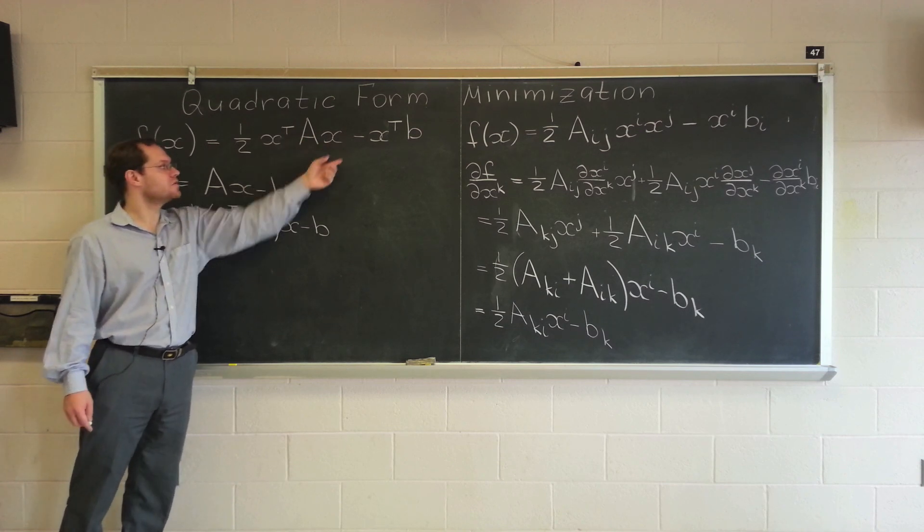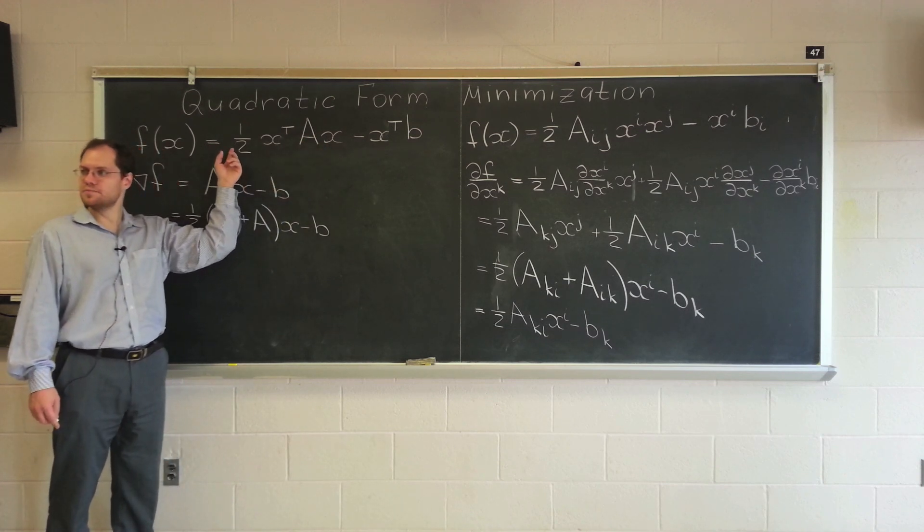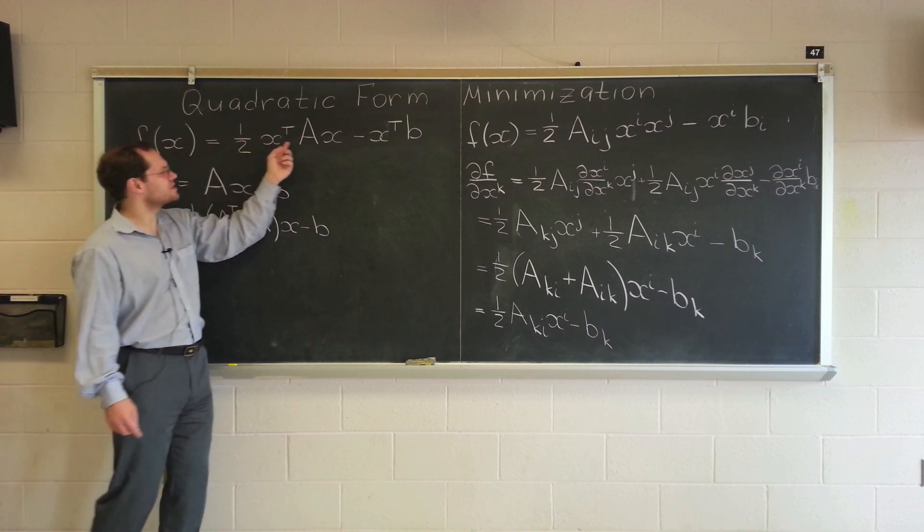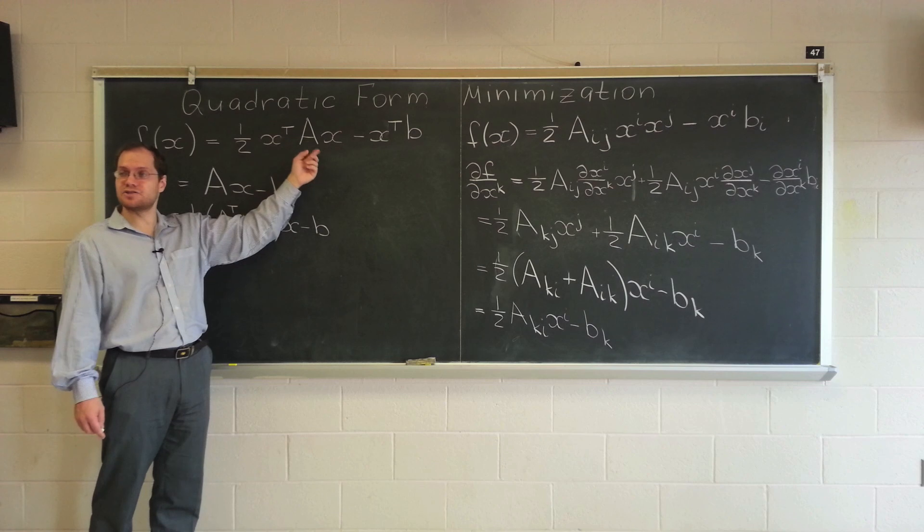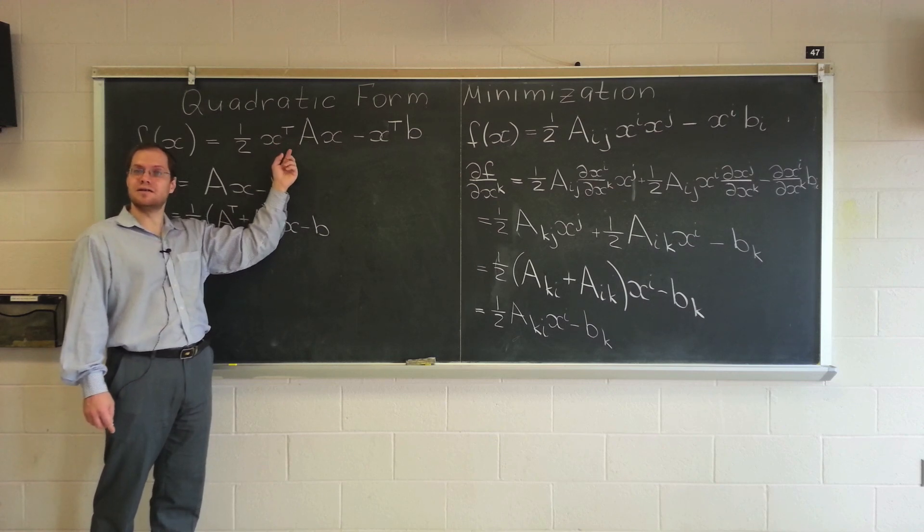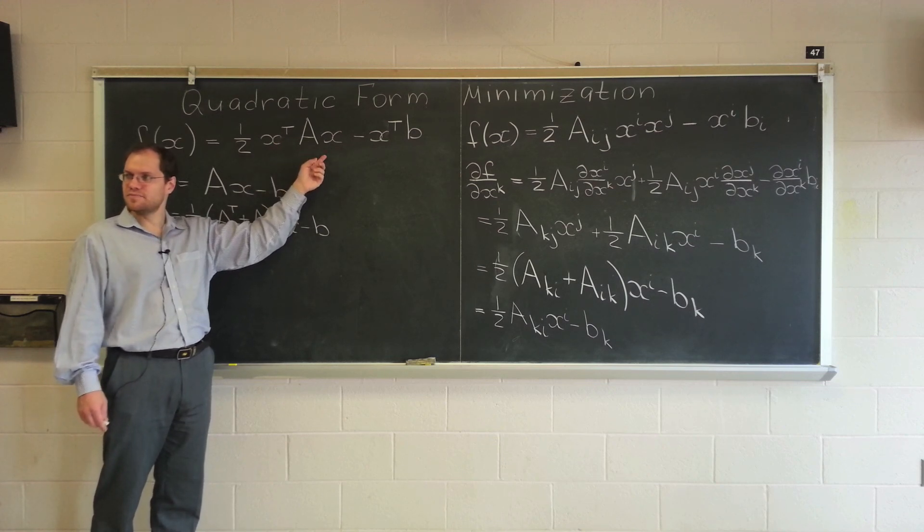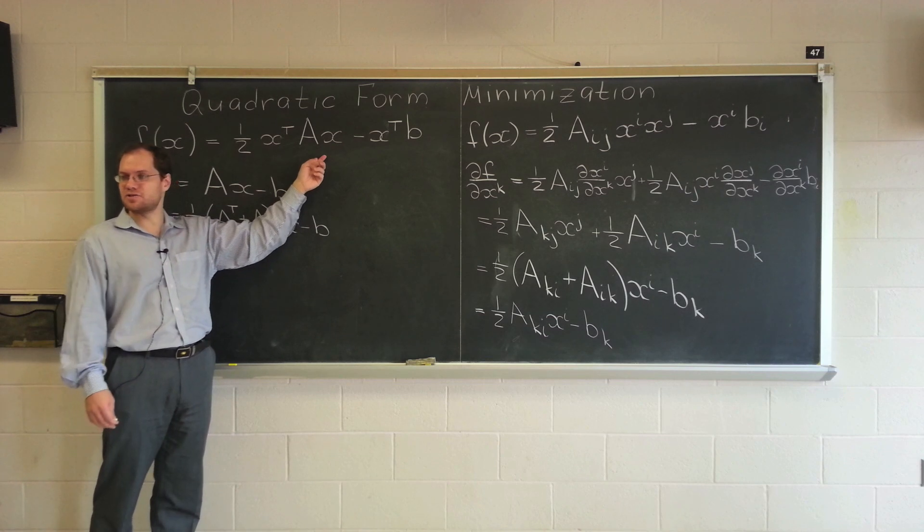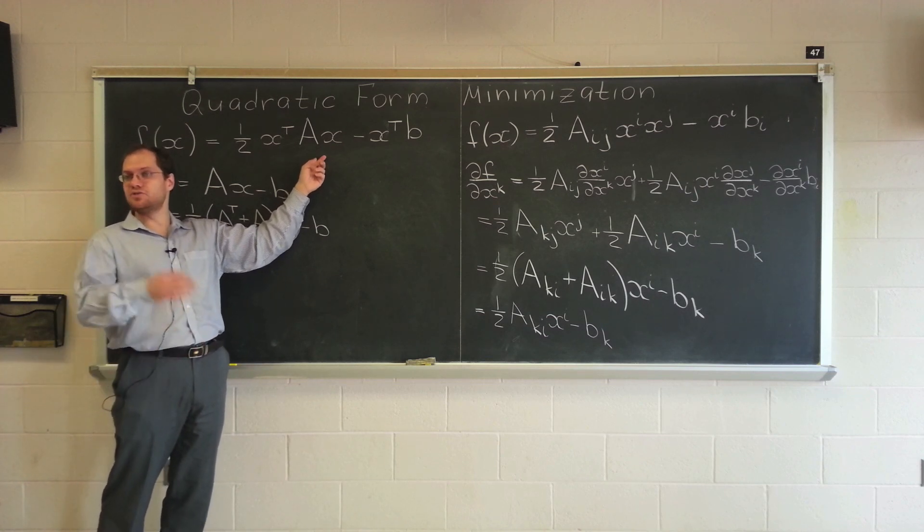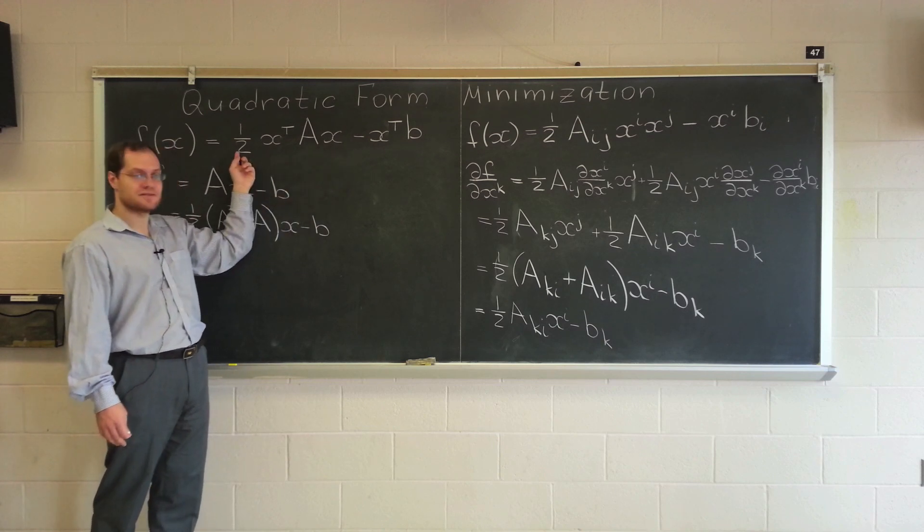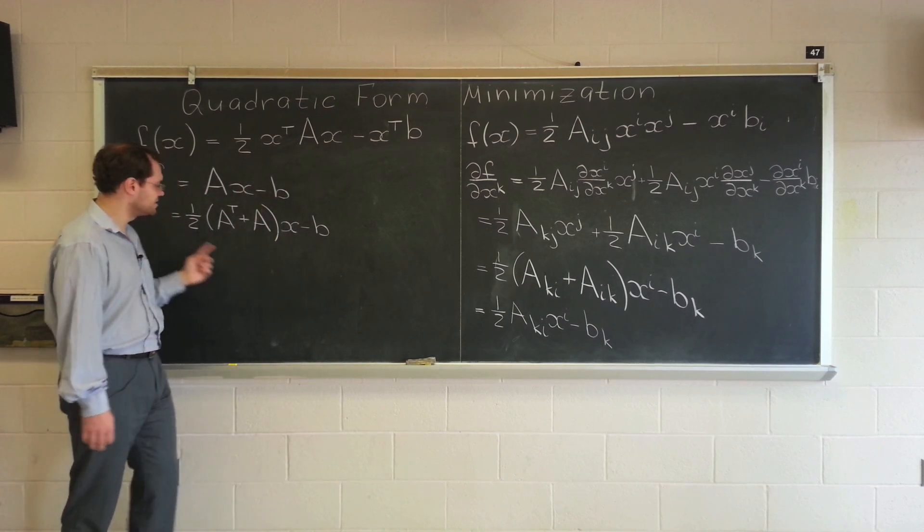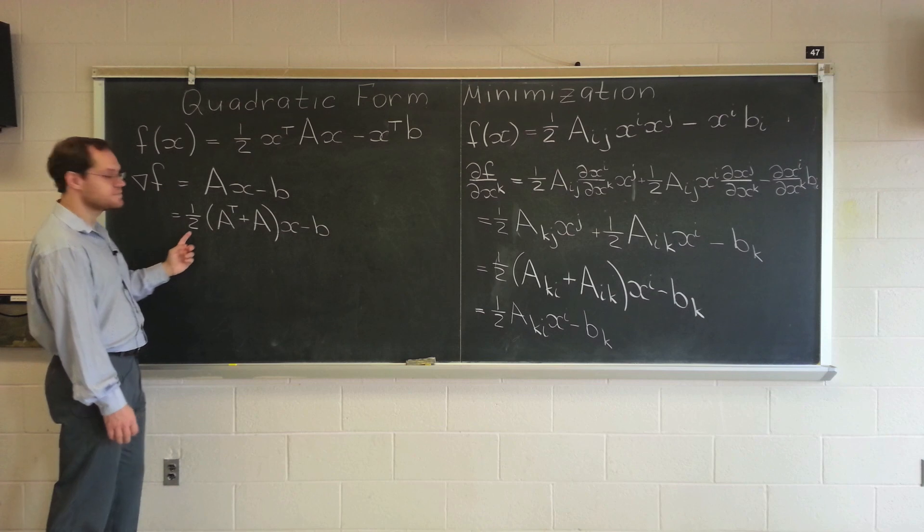So, if you think back to linear algebra, actually, if you replace this A with one half (A + A transpose), which is called the symmetric part of A, it will change this matrix without changing the quadratic form. Because this matrix has, this product has A_12 x_1 x_2, and A_21 x_1 x_2. And if you factor out x_1 x_2 in parentheses, you'll have A_12 + A_21. So, it's really the only thing that matters for this product is the symmetric part.